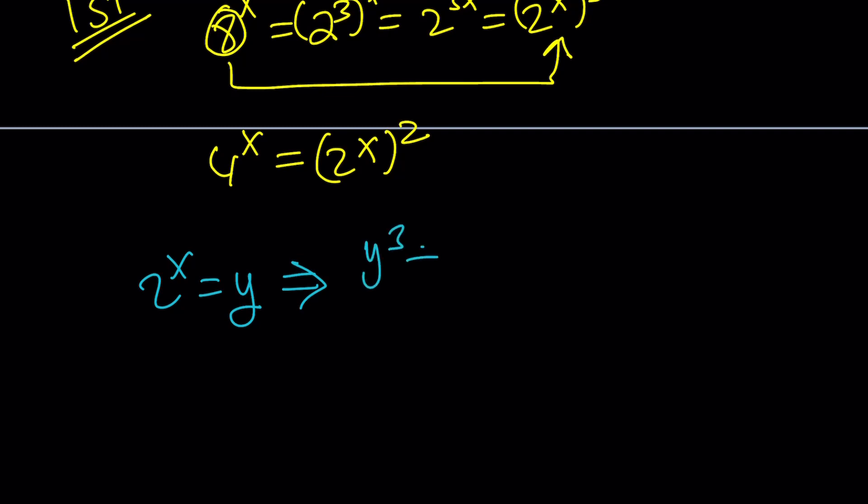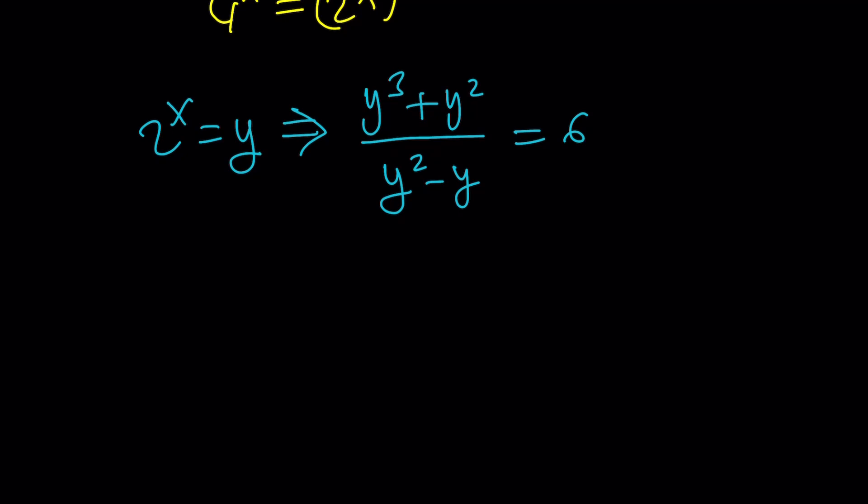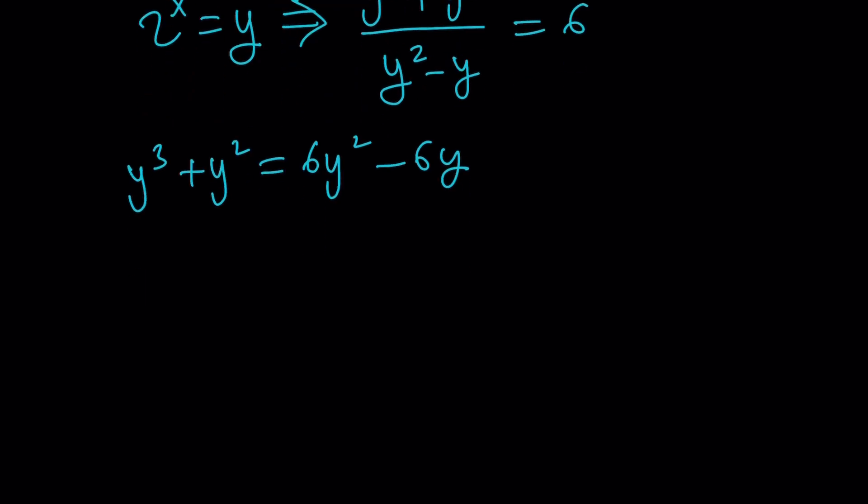This gives us the following: y^3, which is 8^x, plus y^2, divided by y^2 minus y equals 6. Now, this should give us a cubic equation. Let's go ahead and cross multiply. I'm not going to cancel anything out. I just want to cross multiply. So we get 6y^2 minus 6y after distributing, and then put everything on the same side. y^3 minus 5y^2 plus 6y equals 0.